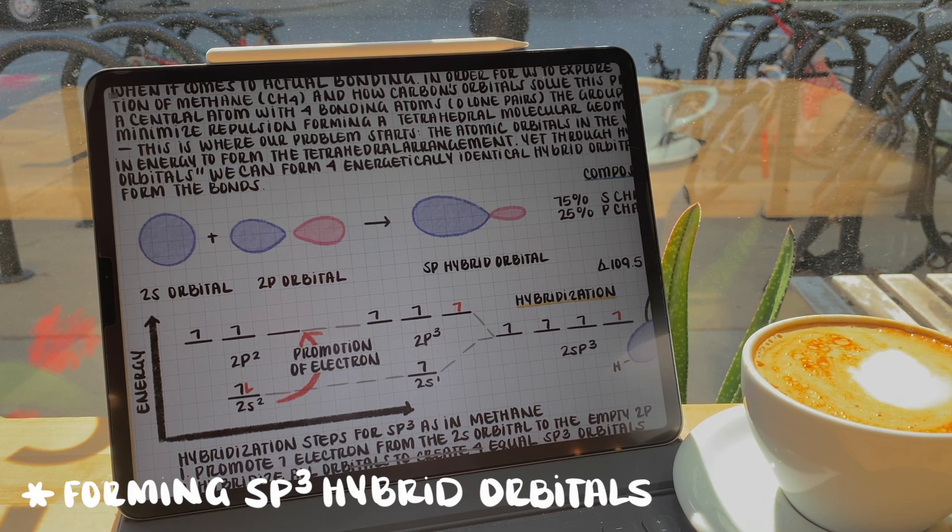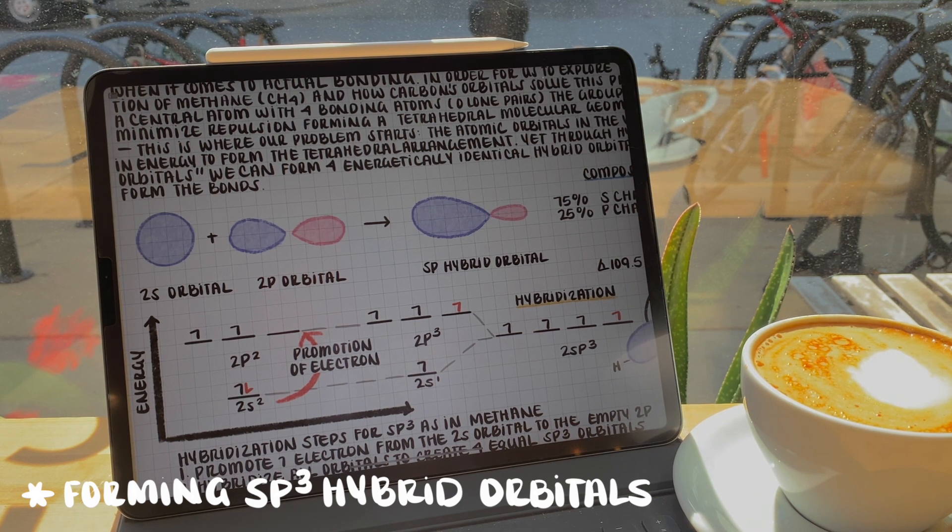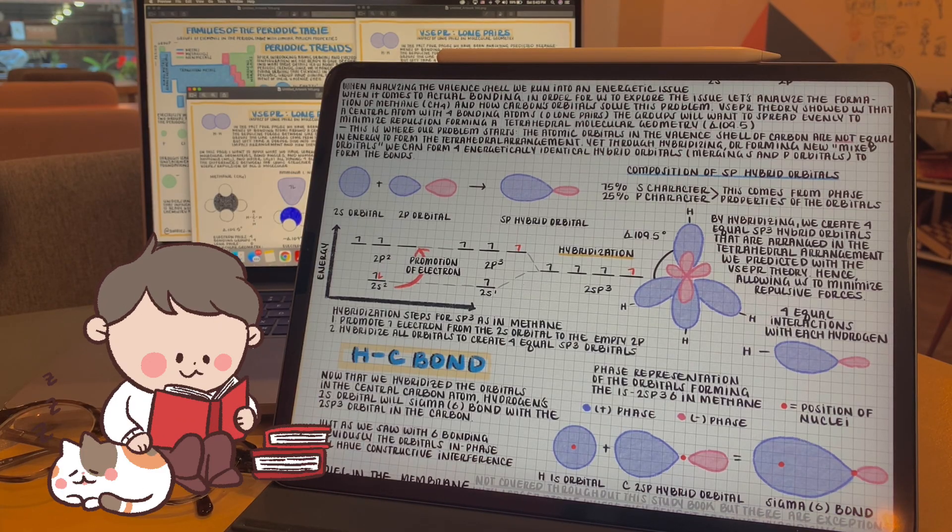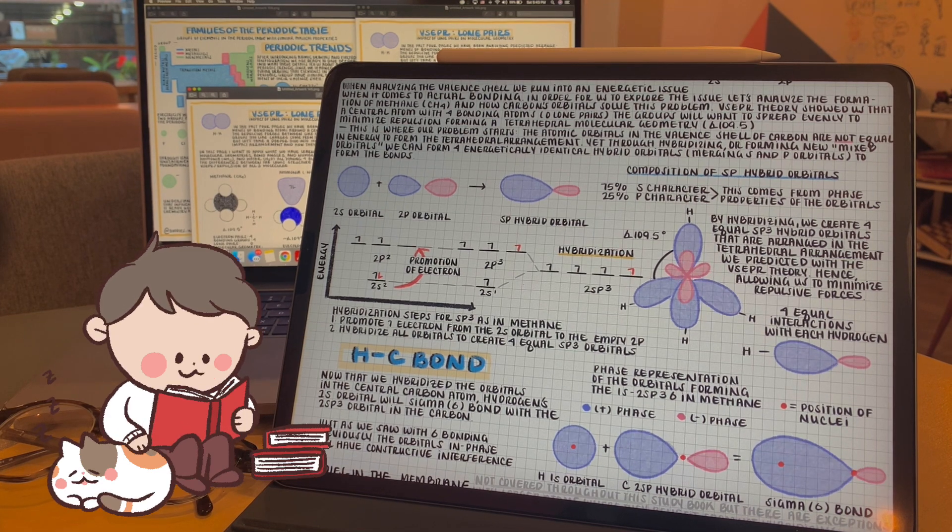Following promotion, the four sets of orbitals are hybridized or all merged together, creating an sp3 orbital set. Each of these orbitals hold one electron, there's four of them, and they're all energetically equivalent. In hybridizing orbitals, it's important to remember that the number of orbitals formed must equal the number of orbitals that we merged.